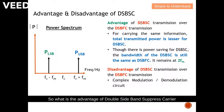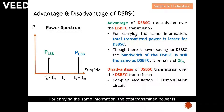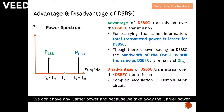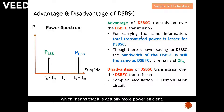What is the advantage of DSB-SC over DSB-FC? For carrying the same information, the total transmitted power is less for DSB-SC. The total power for DSB-SC is simply the power at the lower sideband plus the power at the upper sideband — there is no carrier power. Because we remove the carrier power, DSB-SC transmits lesser power, making it more power efficient.